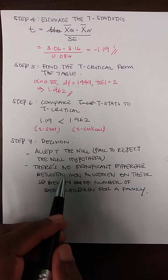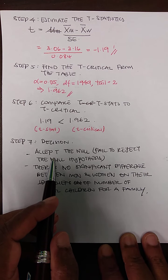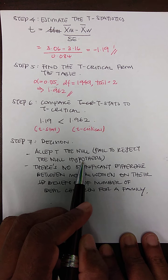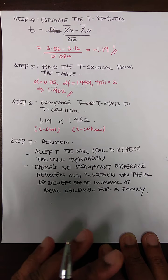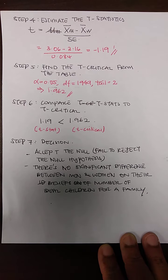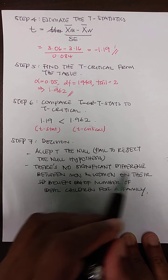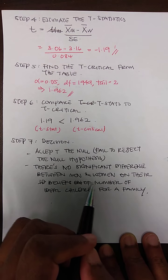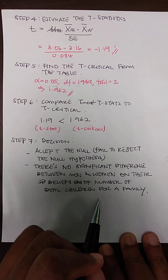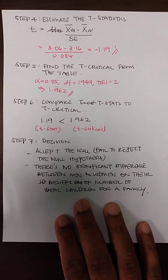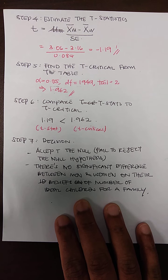Since the t-statistic falls within the boundary, our decision is to fail to reject the null hypothesis. The null hypothesis states that the means of both women and men are the same, so there is no significant difference between men and women in their beliefs about the ideal number of children for a family. This is how we complete an independent sample t-test — always end with an interpretation of what the results mean.